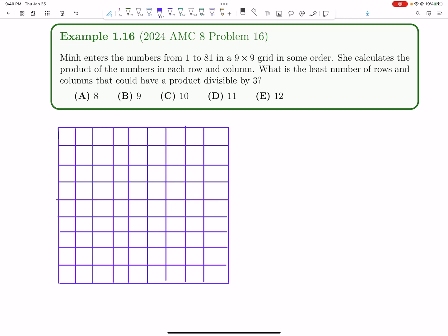Let's tackle this grid problem from the 2024 AMC8. Min enters the numbers from 1 to 81 in a 9 by 9 grid in some order. She calculates the product of the numbers in each row and column, and we're asked to find the least number of rows and columns that have a product divisible by 3.